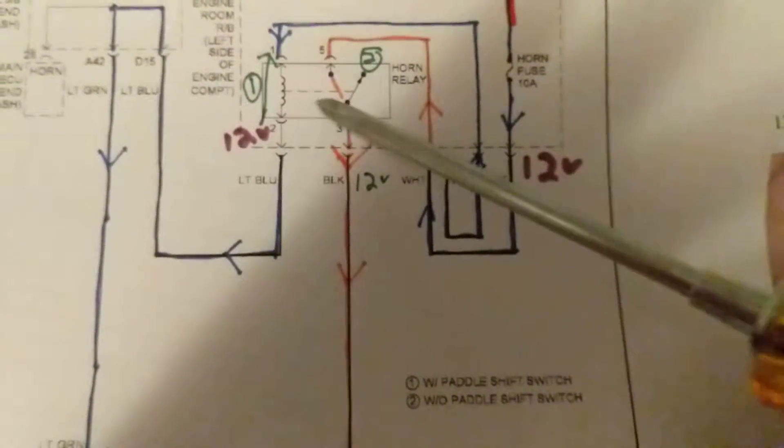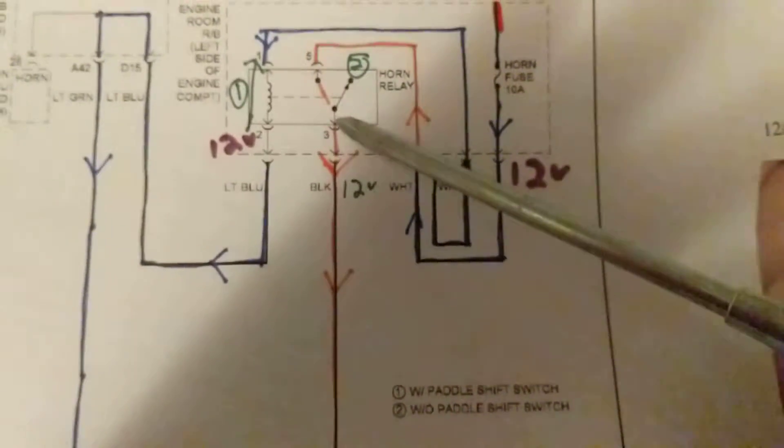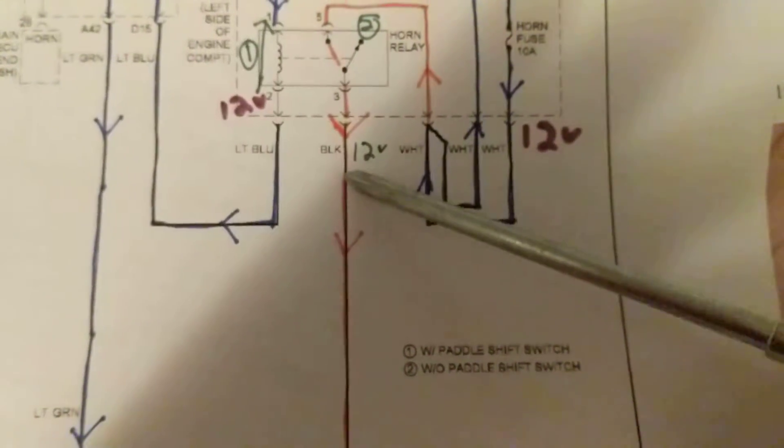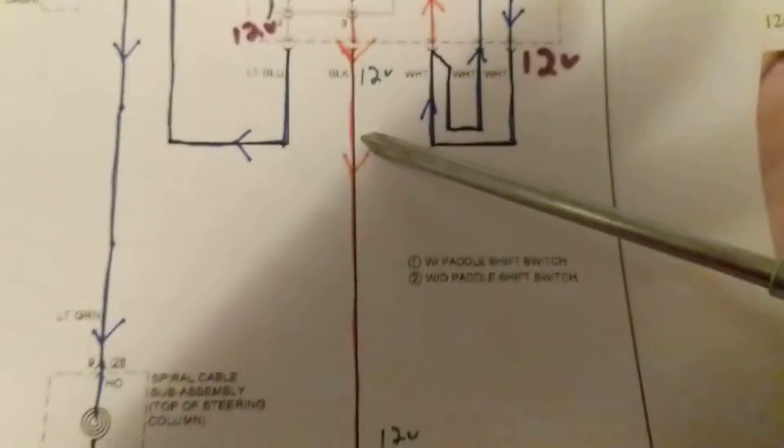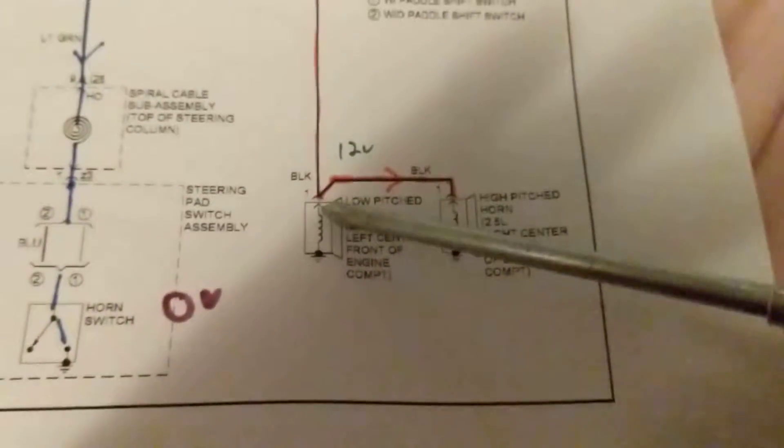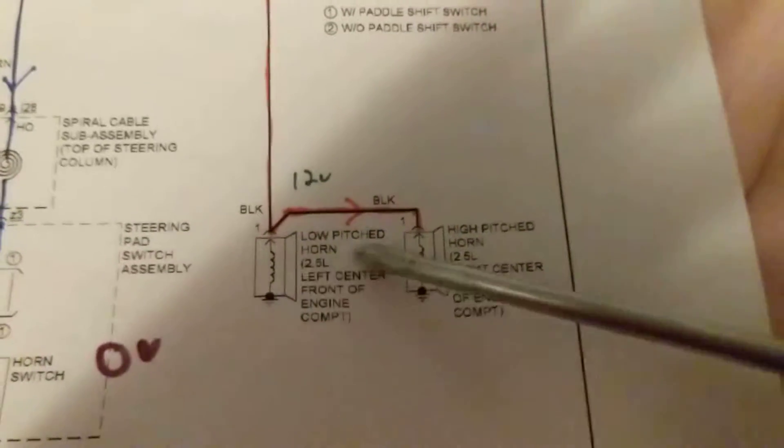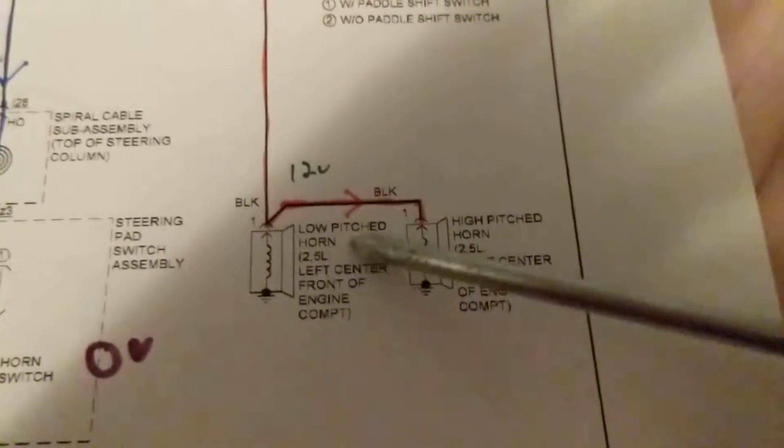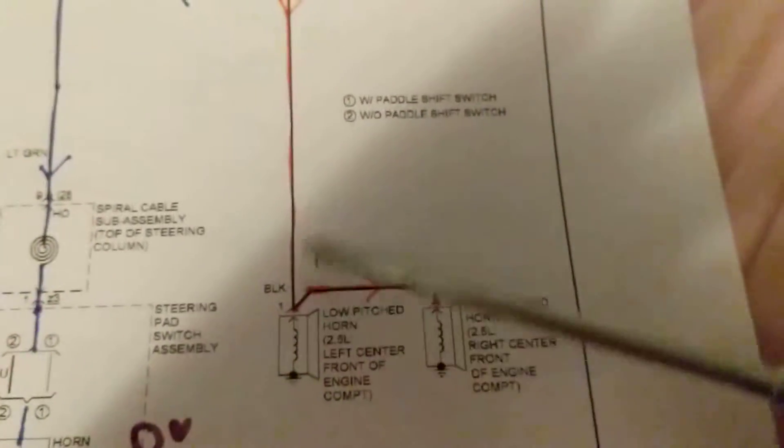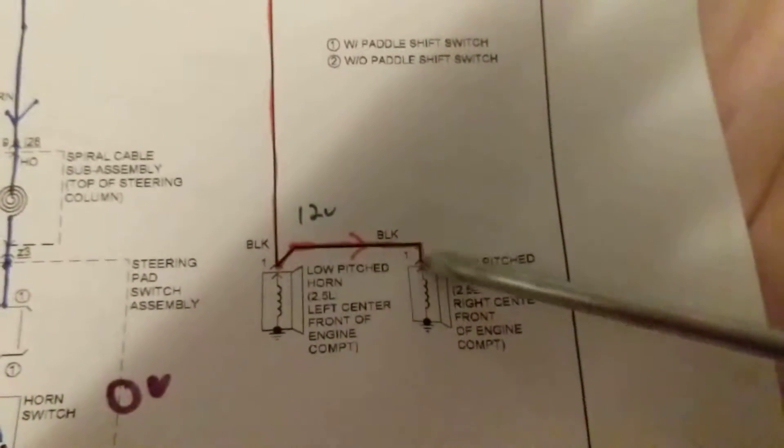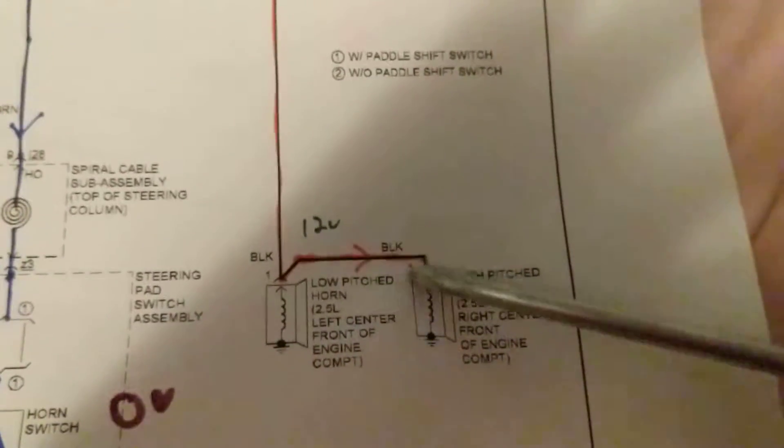Therefore we go out here, pin three, black wire, come out here. Two horns: low pitch and high pitch in this sequence for 2.5 liter. Therefore what will happen over here, the current will split. Some will go this way, some will go this way.